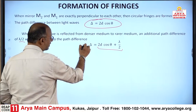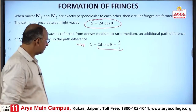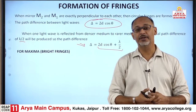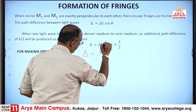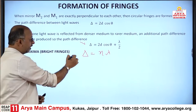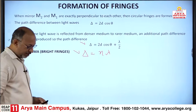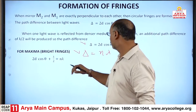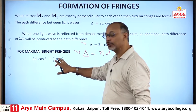This is the exact path difference in the Michelson interferometer. According to this, the bright fringe condition is δ = nλ. If the path difference equals 2D cosθ + λ/2 and we set it equal to nλ, equating these two equations gives us 2D cosθ + λ/2 = nλ.